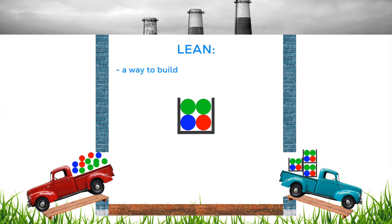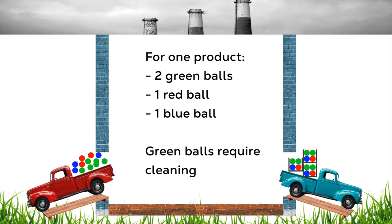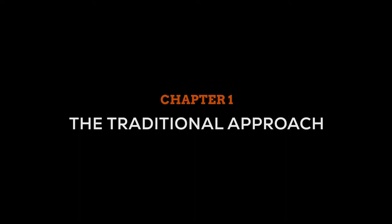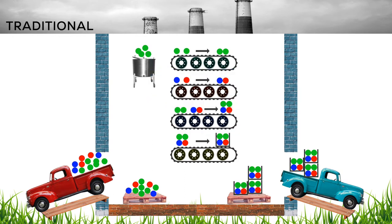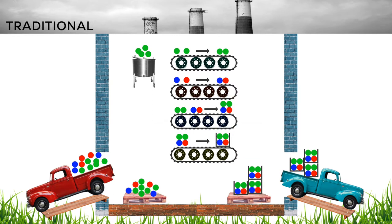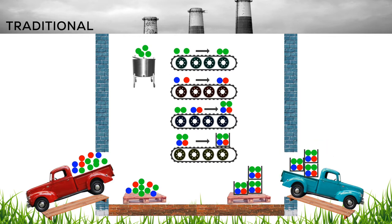Getting back to our model factory, the production process is as follows: we need twice as many green balls as red or blue balls, since the finished product has two green balls and only one red and one blue. Additionally, green balls require a special cleaning step before assembly — red and blue balls don't require this. A traditional non-lean structure might look like this: balls come in from suppliers, unloaded into storage, then taken to be cleaned if green, or directly to assembly if red or blue. We have four specialized assembly lines: one for green with green, one for blue with red, one combining them, and a final packaging line.